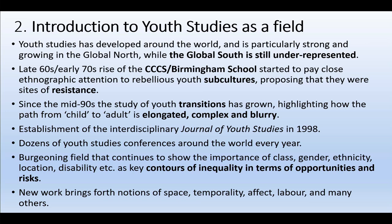Since the 80s and 90s there's been a development of what we call youth transitions — the field of study that looks at the ways young people move from being a child to adult: from going to school to getting a job, from being single to having a partner, and from living at home with family to getting a place of their own. Much of the work in youth transitions has highlighted how that transitional period is elongating, with markers of adulthood like getting a full-time job, getting married, having kids, and owning a house happening much later in life. There's also been a key interest in how inequalities affect that transition, and a broadening into new studies on space, time, affect, and labor.